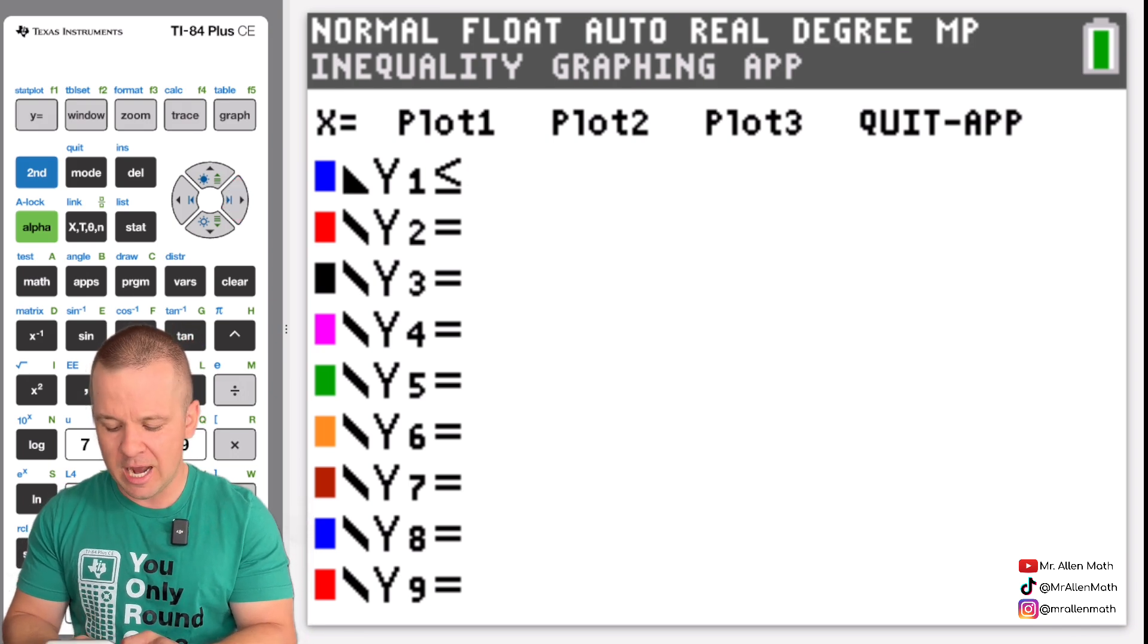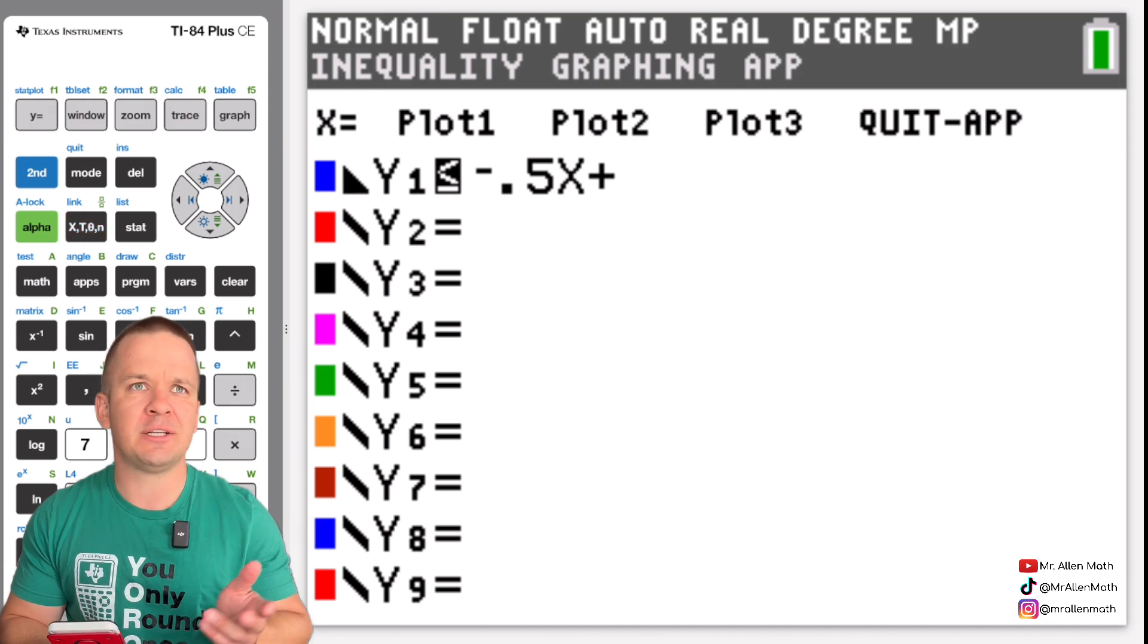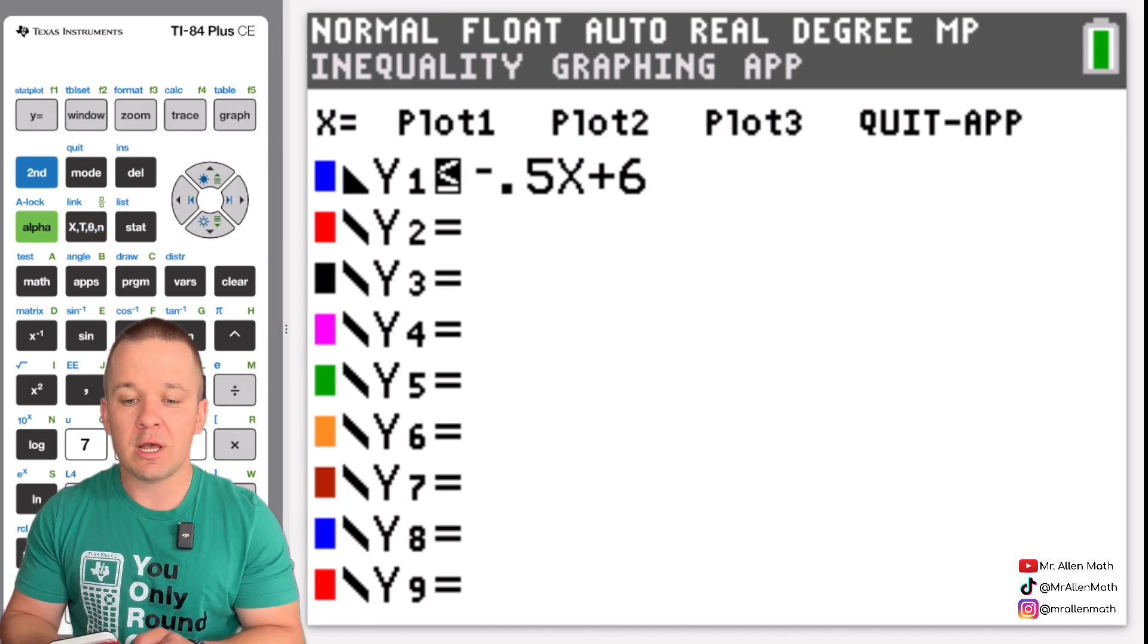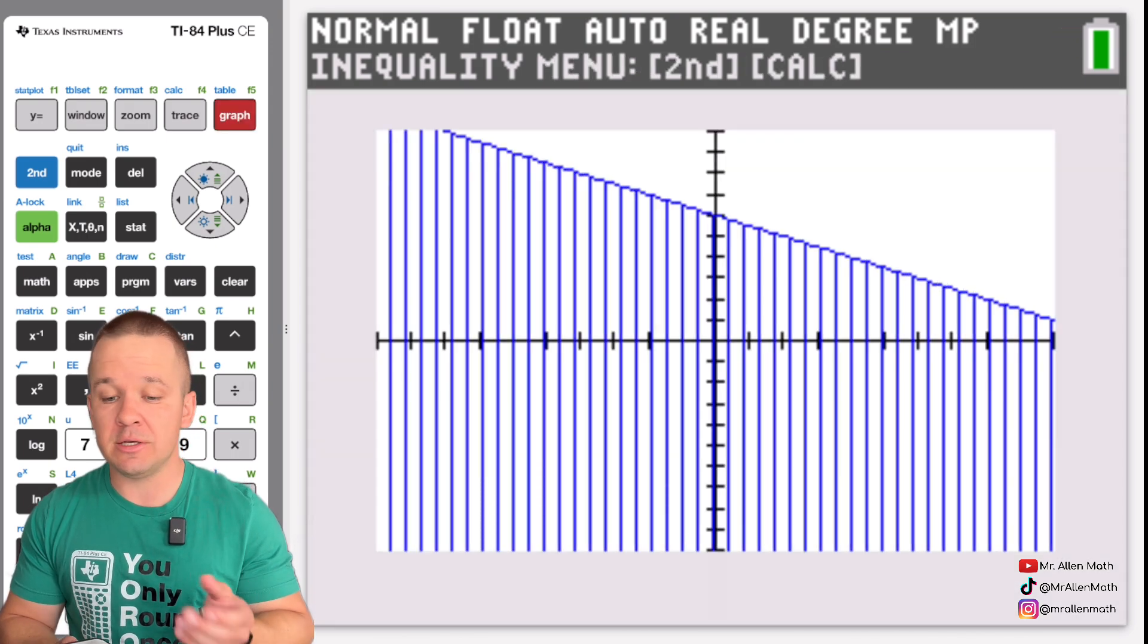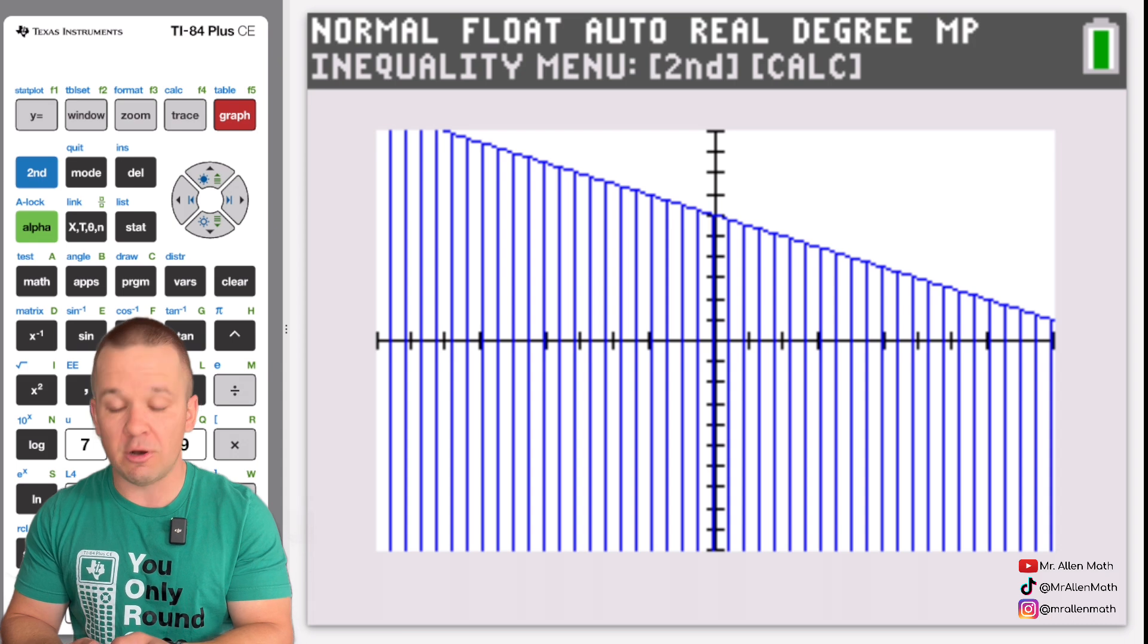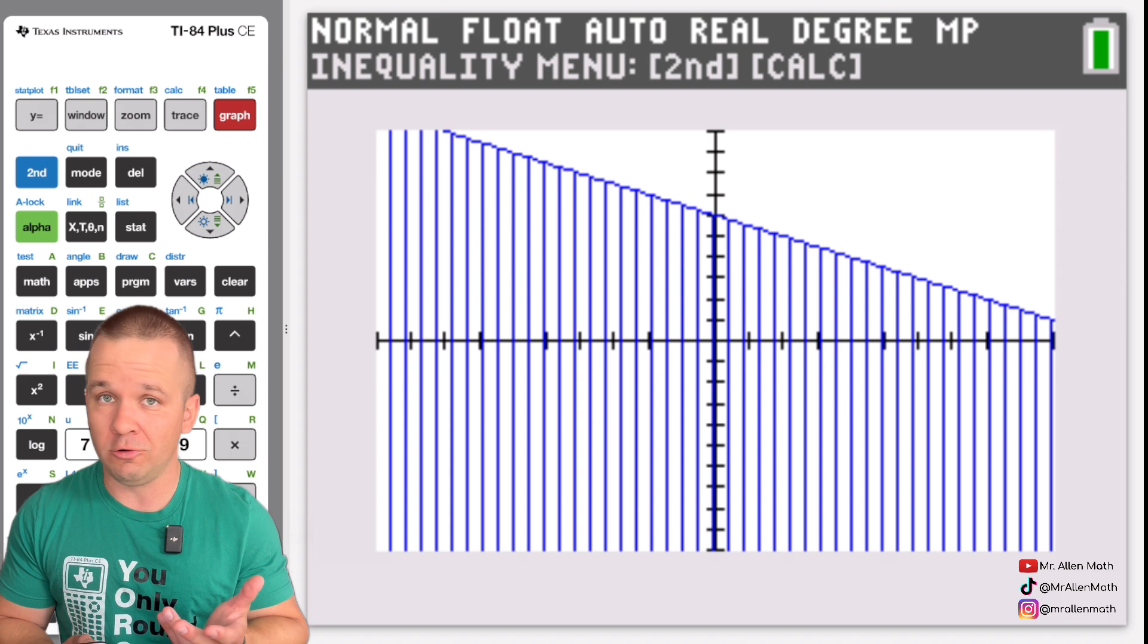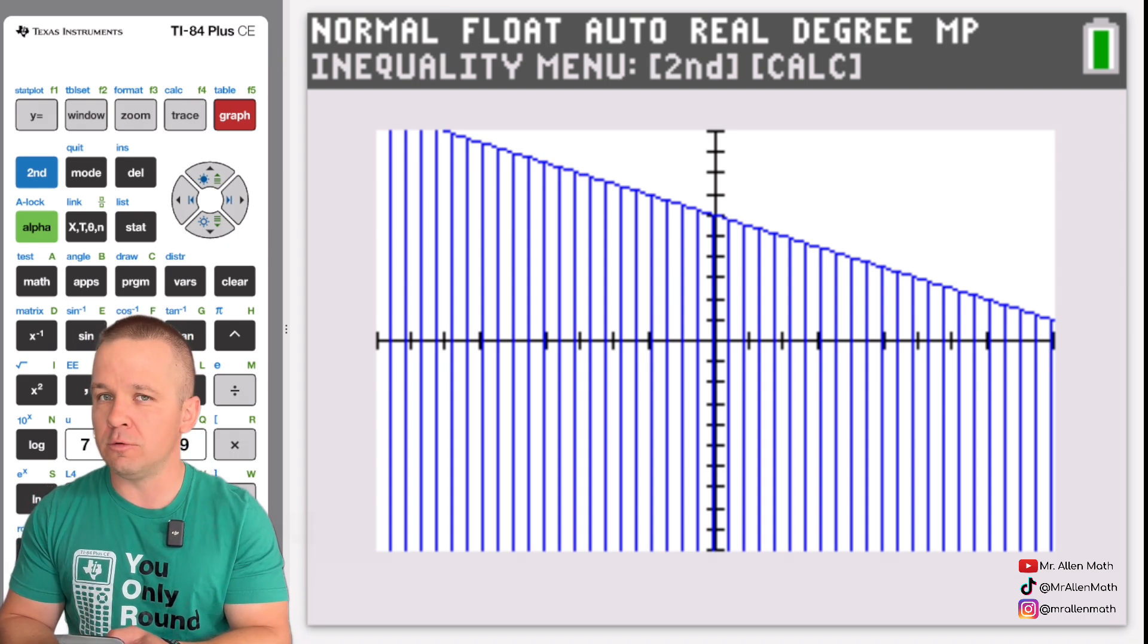So I'm going to give this thing a how about a negative 0.5 slope and then we'll do a positive how about six for our y-intercept. So if we just graph this let's hit graph. I am currently in the zoom six zoom standard so if your students are not that's one thing that you're going to want to address right away.